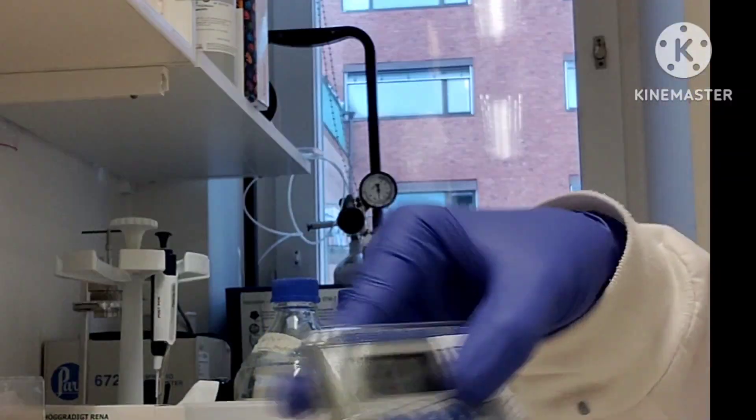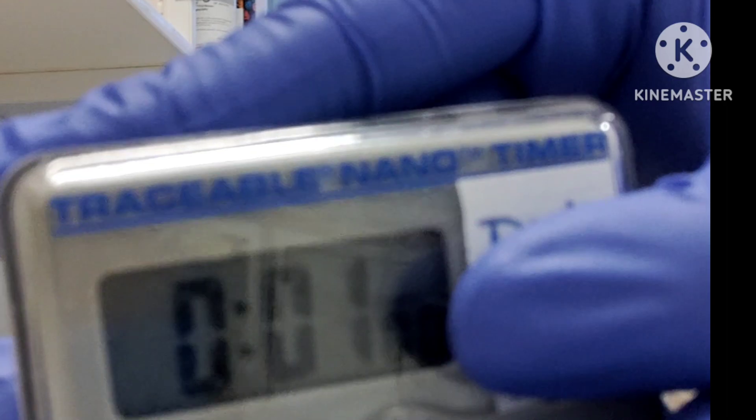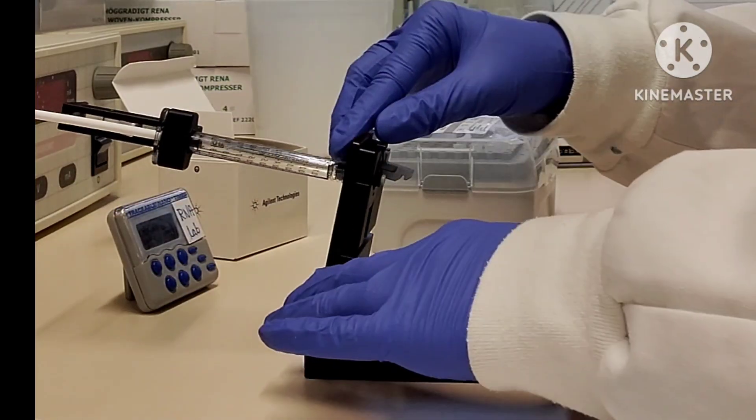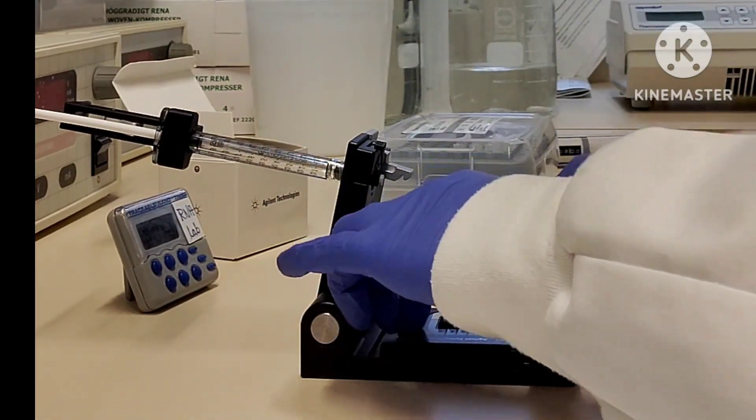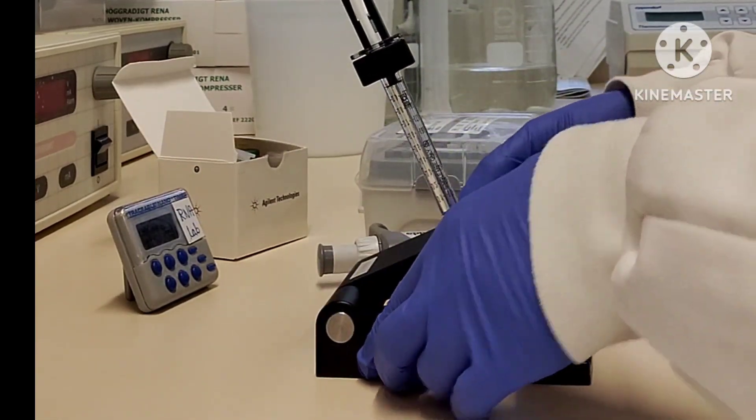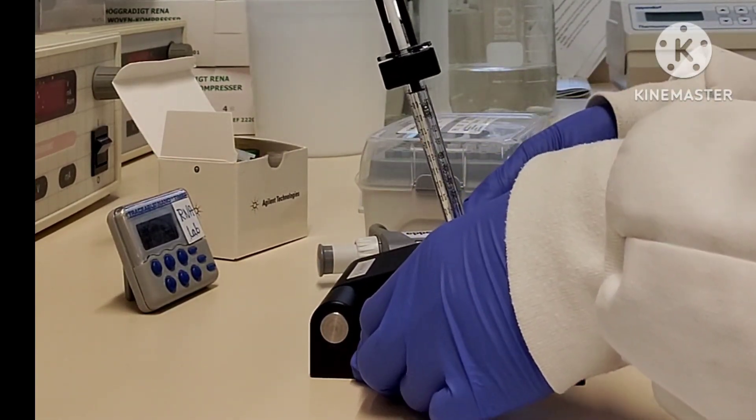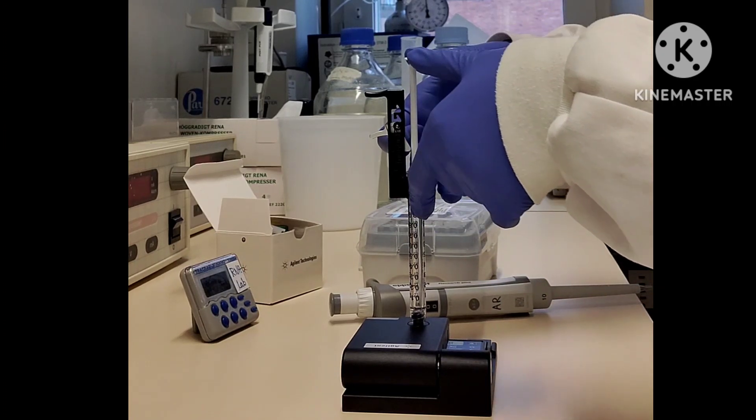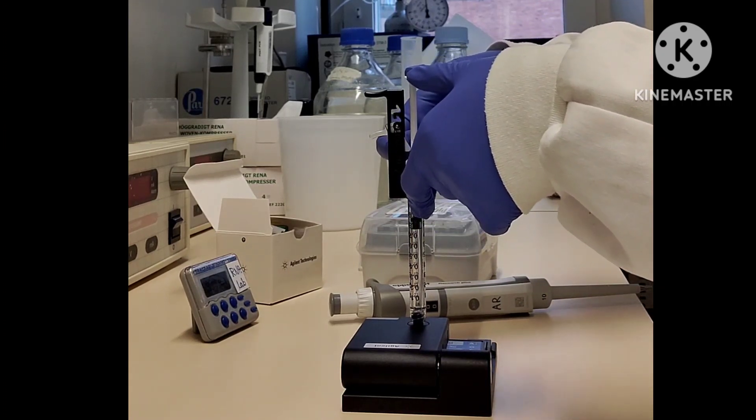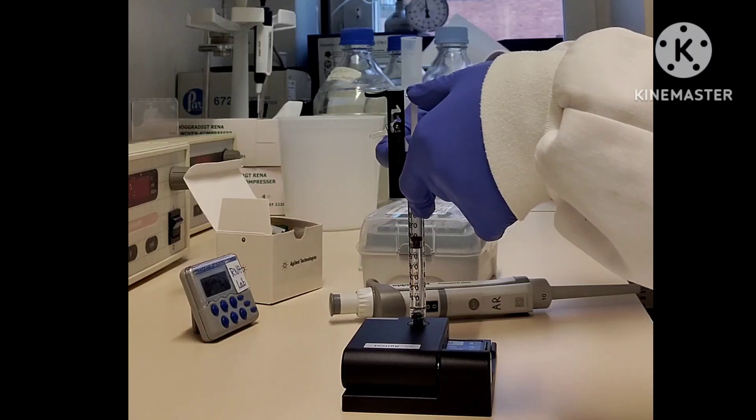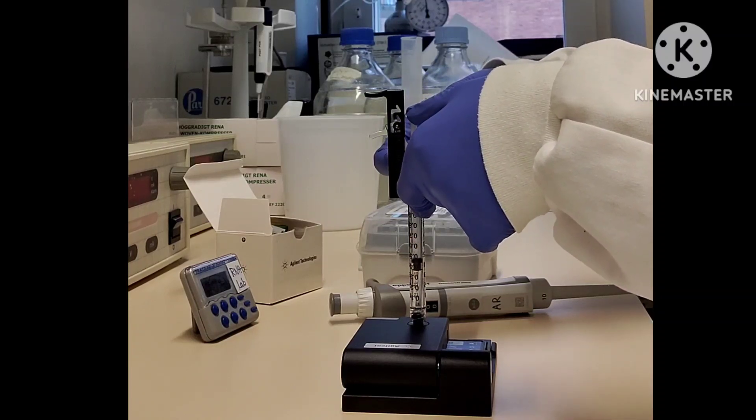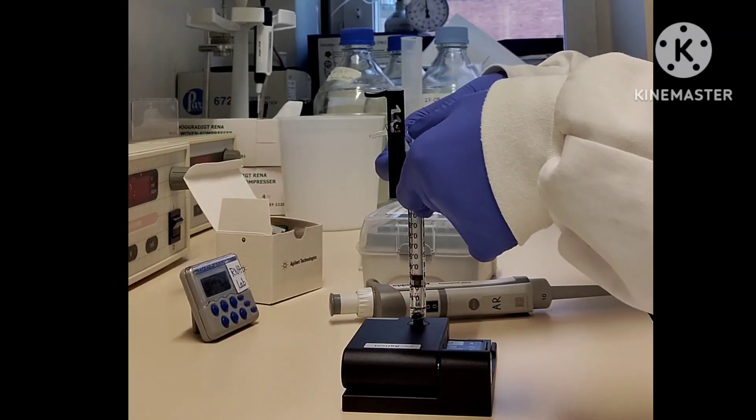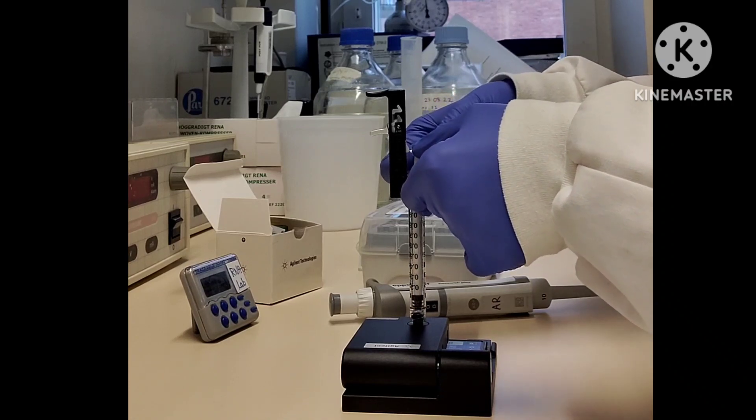Now make sure your timer is set at one minute—do it beforehand. Close the chip priming station; once you close it, you will hear a click sound. Now press down the plunger of the syringe until it is held by the clip, then start the timer for one minute and just wait.